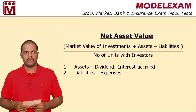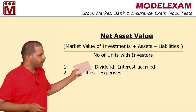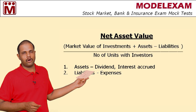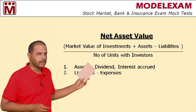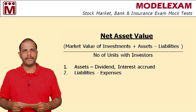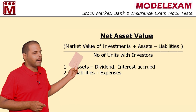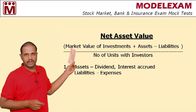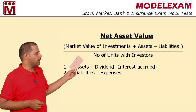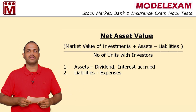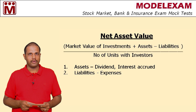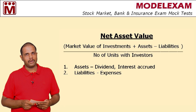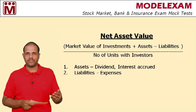NAV calculation. What is NAV? NAV, as you know, is net asset value, or the current market price of a unit. The formula for NAV is: market value of investments plus assets minus liabilities, divided by the number of outstanding units. Here, assets include dividends or interest income, and liabilities are expenses payable.